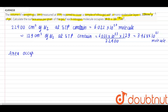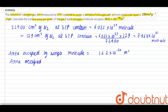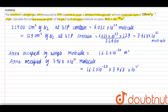Area occupied by single molecule equals 16.2 × 10⁻²⁰ meter square. Total surface area equals 16.2 × 10⁻²⁰ multiplied by 3.468 × 10²¹, which equals 561.8 meter square.